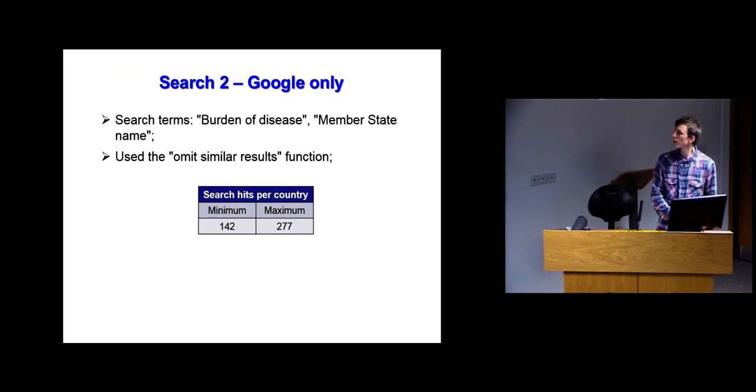For the second search, I used the search terms burden of disease and the names of the member states again for each of the 53. I used Google and left on the function to knock out similar results because they usually were just the same result repeated. I got that many search hits and 41 relevant studies.